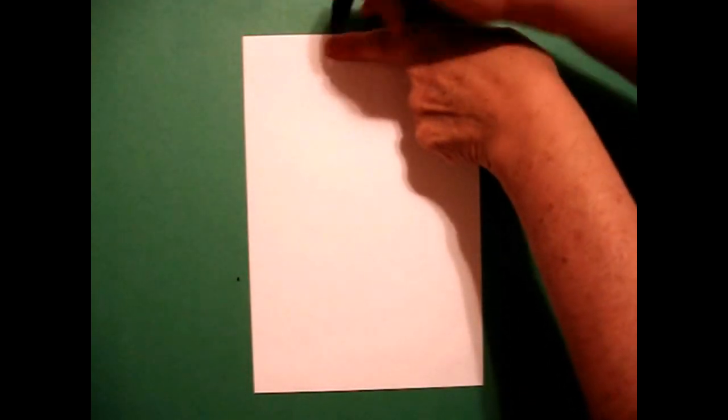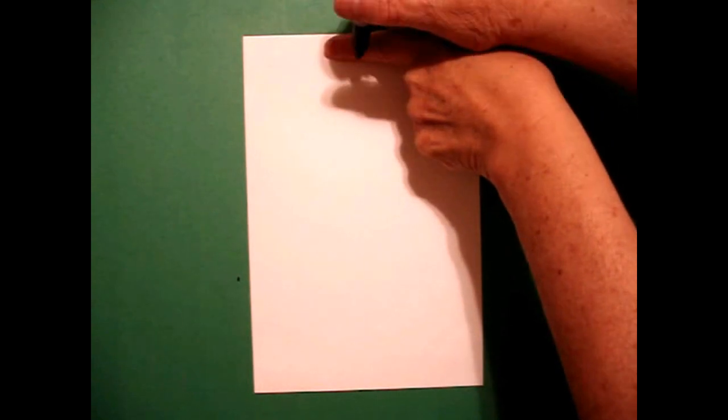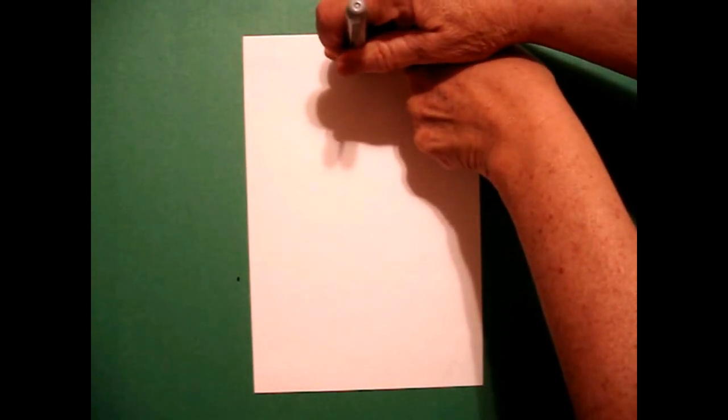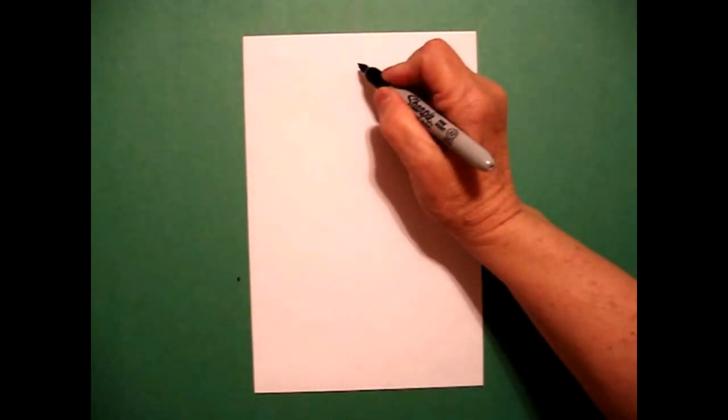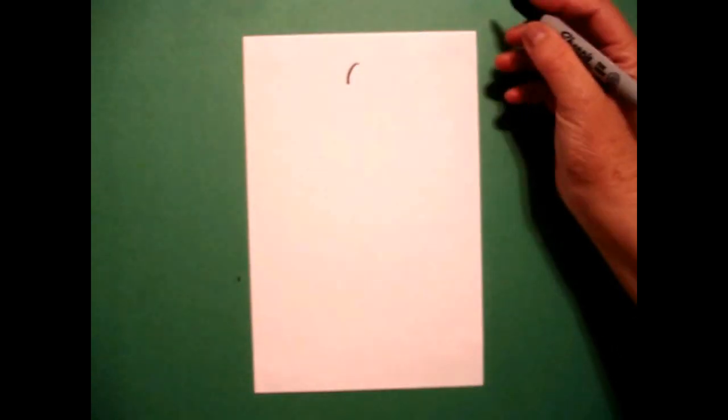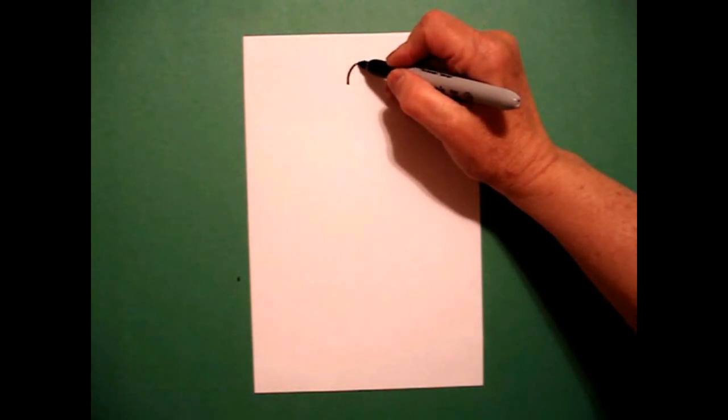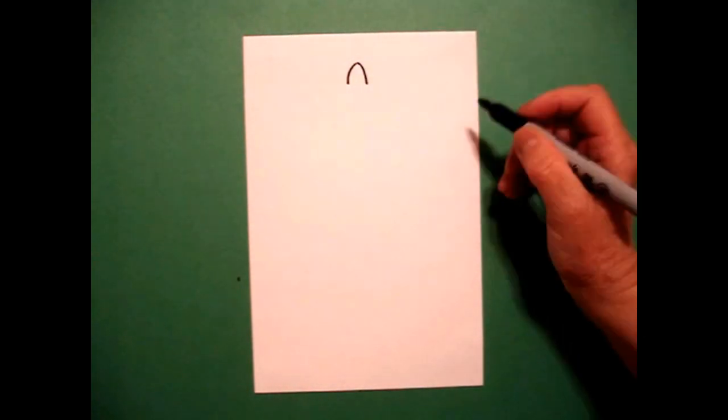Today's project is How to Draw the Eiffel Tower. I'm going to take one finger at the top in the center and put a dot. And from that dot, I'm going to draw a little curve line down on the left, come back to the dot, little curve line down on the right.